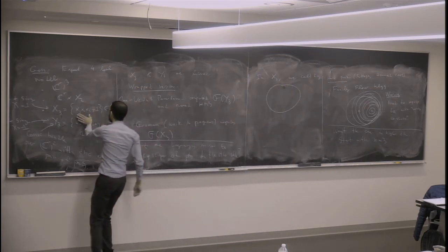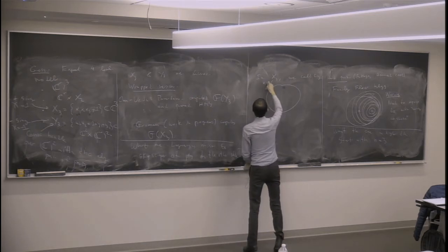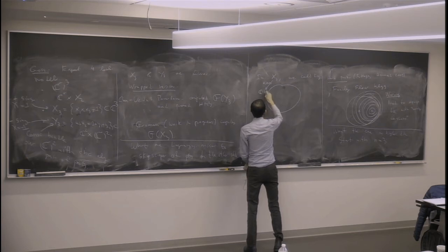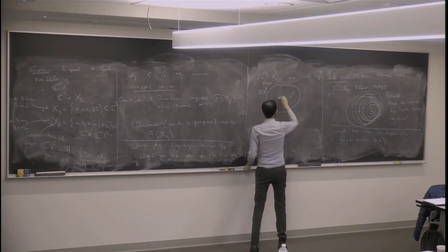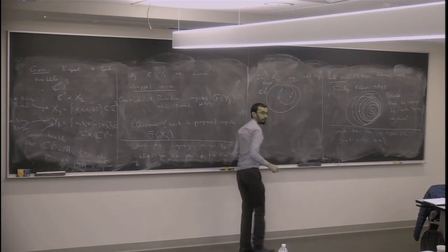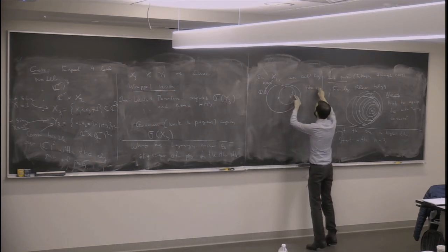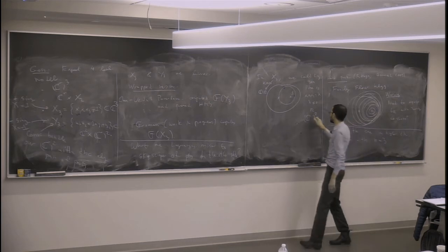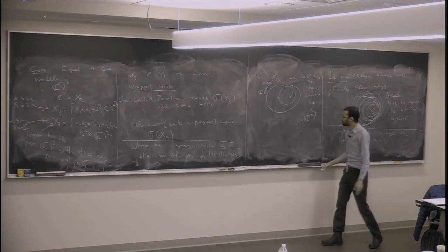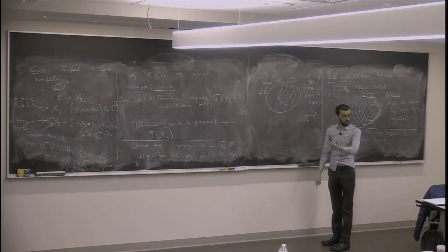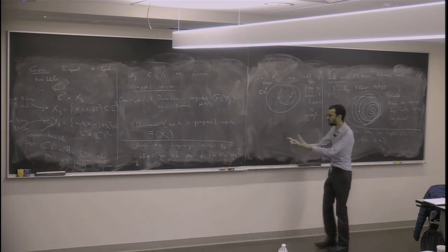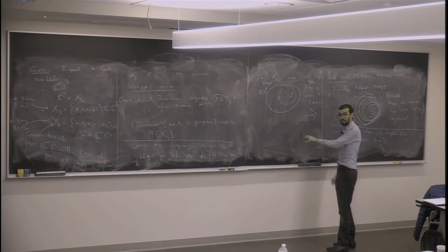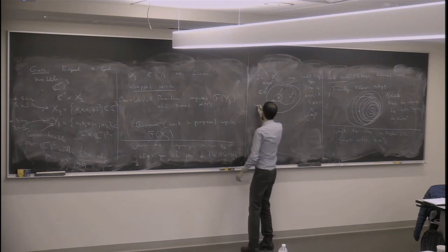In X₃, we could try the same thing. X₃ still has its projection by x₁x₂x₃ from C³ to C, but of course it's C minus the point one — here's the point one, here's the origin. The general fiber is the locus where x₁x₂x₃ equals lambda, for lambda not equal to zero. This is the same thing as C*². Inside C*², the only reasonable Lagrangian you could try to parallel transport — you could try to take the zero section or you could try to take a fiber. If you take a fiber you get something non-compact; we want compact Lagrangians. So we should take the zero section.